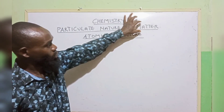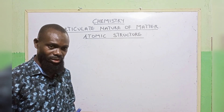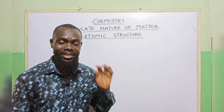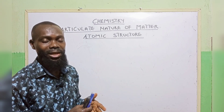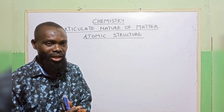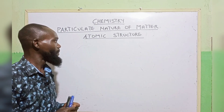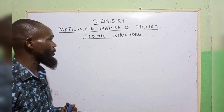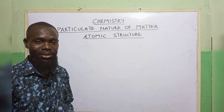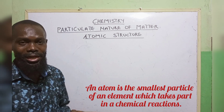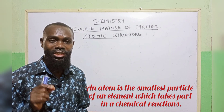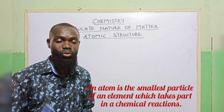Now, we already know what matter is. We know that matter is anything that has weight and mass and occupies space. And this matter is made up of what we call an atom. What is an atom? An atom is the smallest particle of an element which takes part in a chemical reaction.